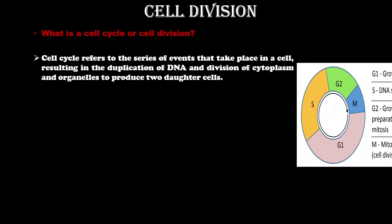The cell cycle refers to the series of events that take place in a cell resulting in the duplication of DNA and division of cytoplasm and organelles to produce two daughter cells. Cell division mainly divides a cell into two cells. A cell is made up of cell membrane, nucleus, and cytoplasm — all of these need to be divided.